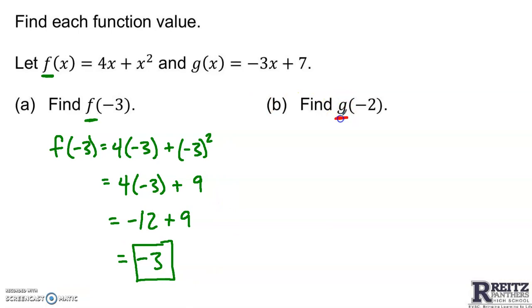To find g of negative 2, I need to use the rule for function g and everywhere I see x, replace it with negative 2. So g of negative 2 is negative 3 times x, negative 3 times negative 2, plus 7. Negative 3 times negative 2 is positive 6. Now I can add 6 and 7 to get 13. g of negative 2 is 13.